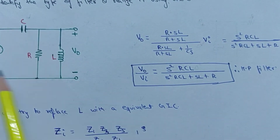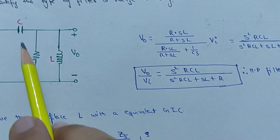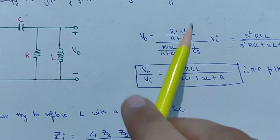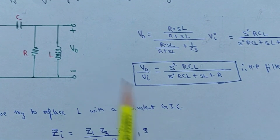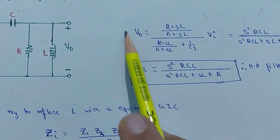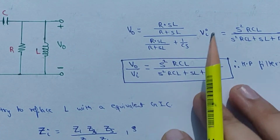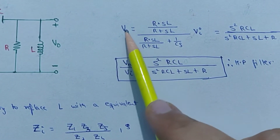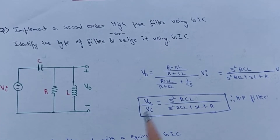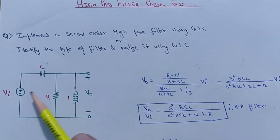This will be our standard high pass filter configuration. It has one capacitor, one inductor, and one resistor. First, I have proved that it is a high pass filter by simply calculating the transfer function. This is our input and this is our output. You can apply Kirchhoff's laws to calculate the transfer function. V0 is equal to the impedance across these two terminals divided by the total impedance.